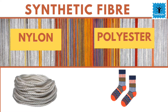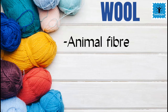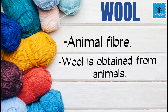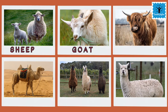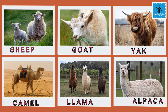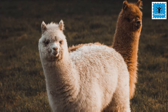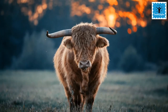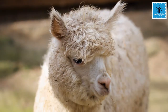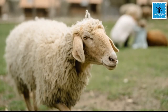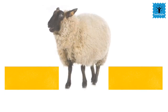First in the list is wool, which is an animal fiber. Wool comes from animals like sheep, goat, yak, camel, llama, and alpaca. These wool-yielding animals have a thick coat of hair all over their body because the hair traps a lot of air, and since air is a bad conductor of heat, this trapped air keeps their body warm in winter.